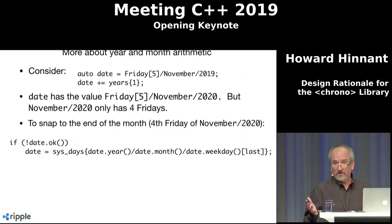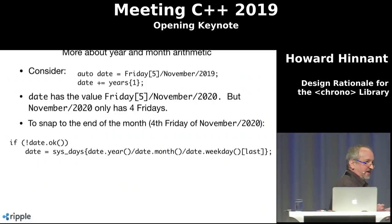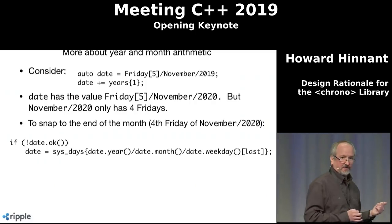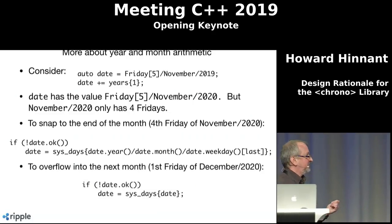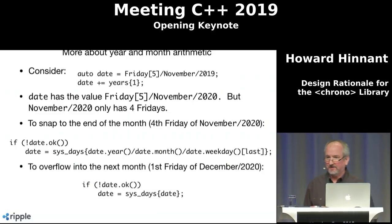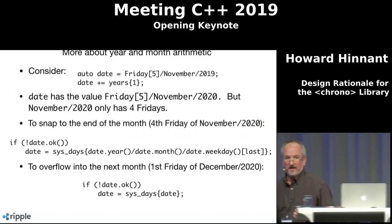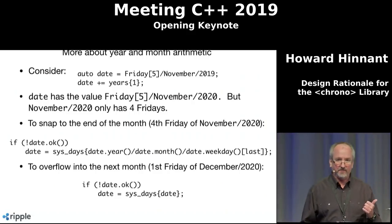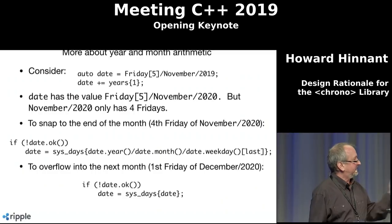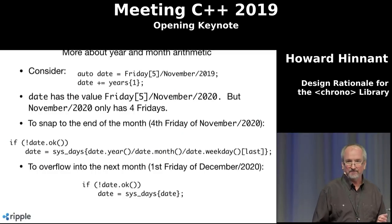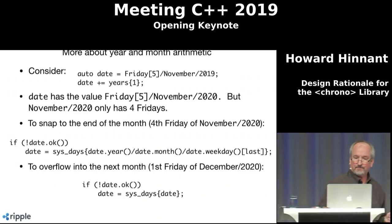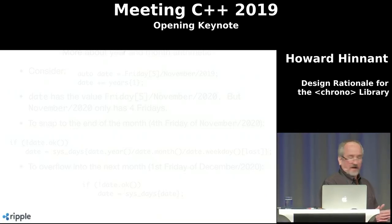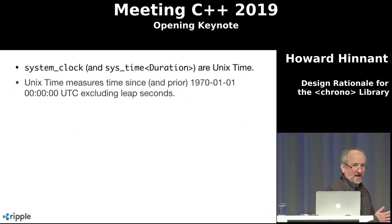For year and month arithmetic on year_month_weekday: given the fifth Friday of November 2019, adding a year gives fifth Friday of November 2020. If that month doesn't have five Fridays — check ok(), which returns false — you can snap to the last Friday of the month by extracting year, month, and weekday, indexing with 'last', then bouncing off sys_days. Or to get the first Friday of December, just convert directly to sys_days and back. Same pattern as with year_month_day.